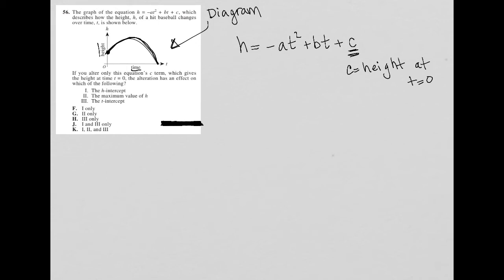The alteration has an effect on which of the following. So at t equals zero, I see that the height is up here, I don't know what that value is, but I do know that it's equal to c because they just told me that. So if I were to change that c, it looks like either it would go higher or it would go lower on the y-axis.